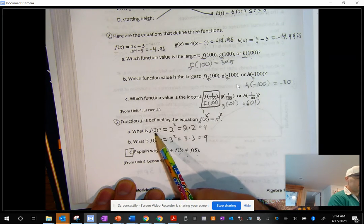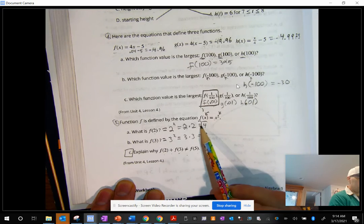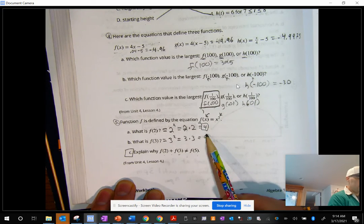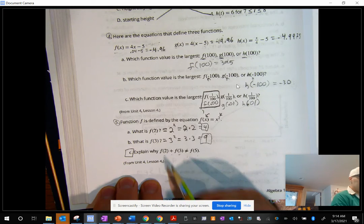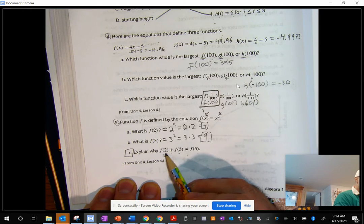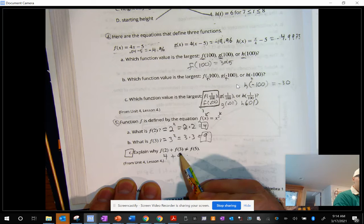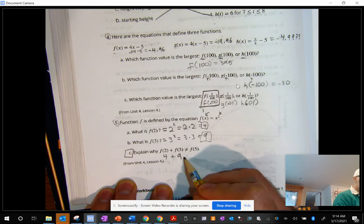Because F of 2 equals 4, and F of 3 equals 9. So if I were to say what these two things equal, it would be 4 plus 9, and that equals 13.